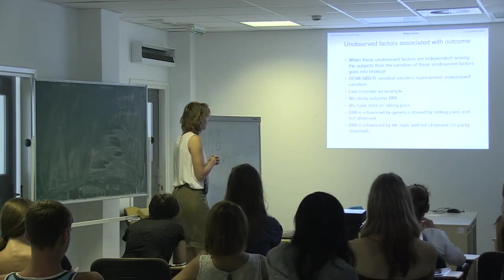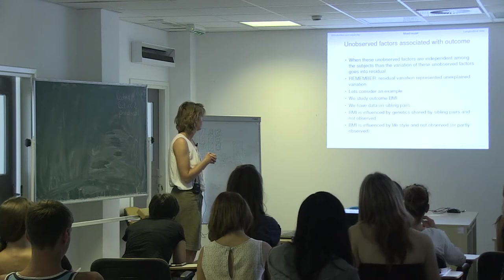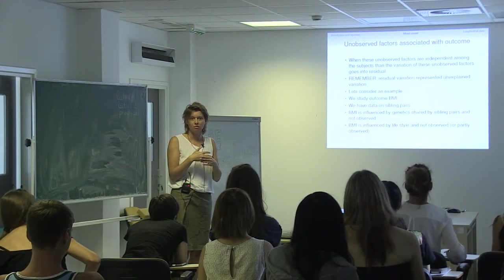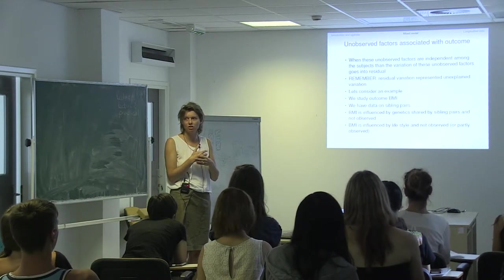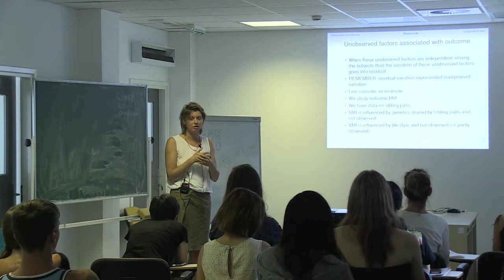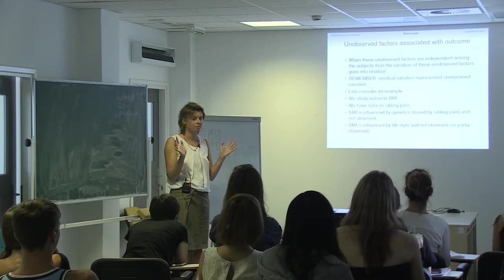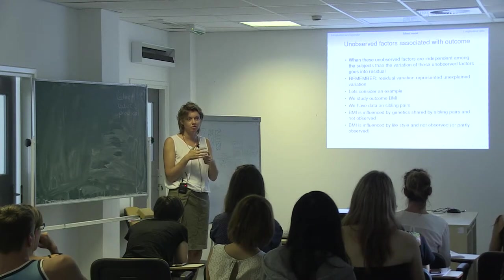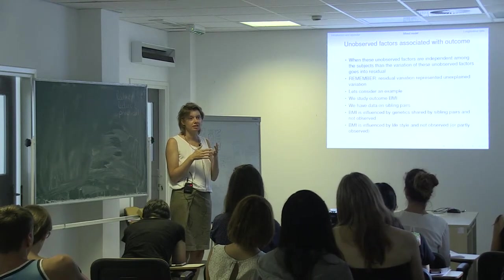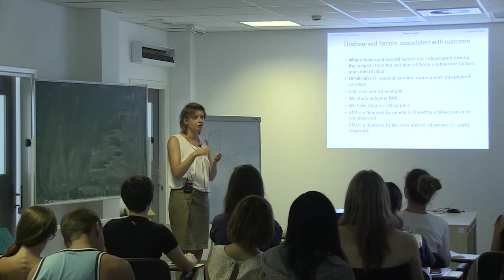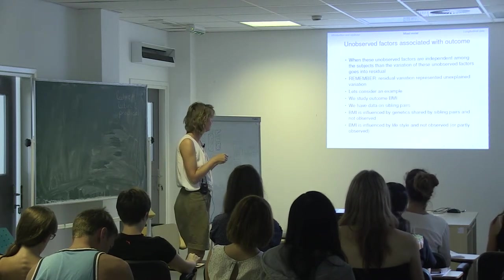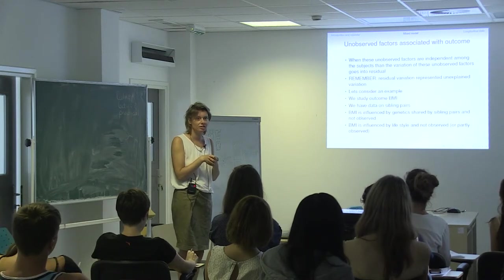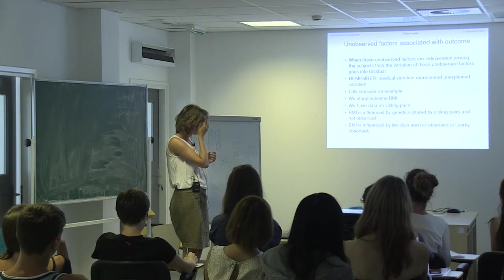Let's consider an example: take BMI and say that we have family data, sibling pair data. We know that BMI is influenced by genetics — if you look up the literature and the GWAS's, there are many loci identified with small and larger effects. So it's clear genetics plays a role in BMI. But we also know that BMI is influenced by lifestyle, by your daily activity, by the food you take. And this is also often running in families — if you come from a family which always runs marathons, you probably will also run marathons.